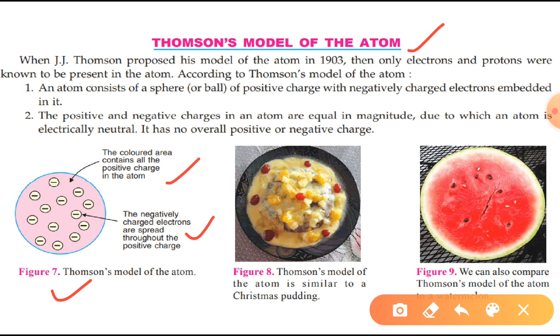According to Thomson, the mass of the atom is considered to be uniformly distributed. So this was the idea presented by Thomson.